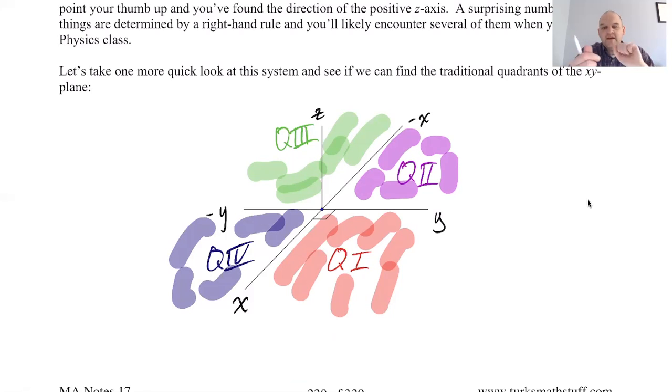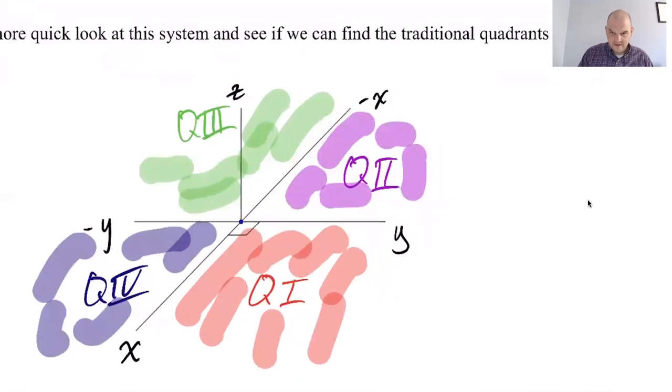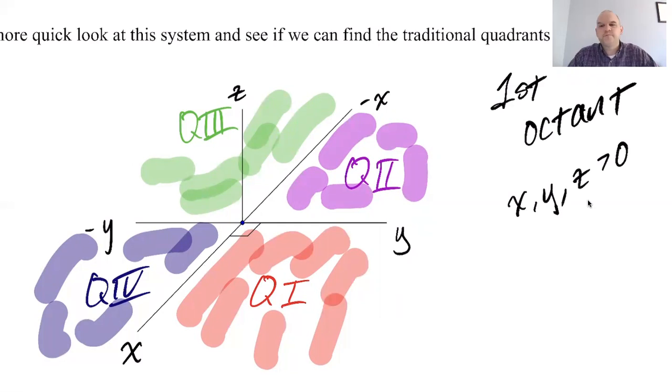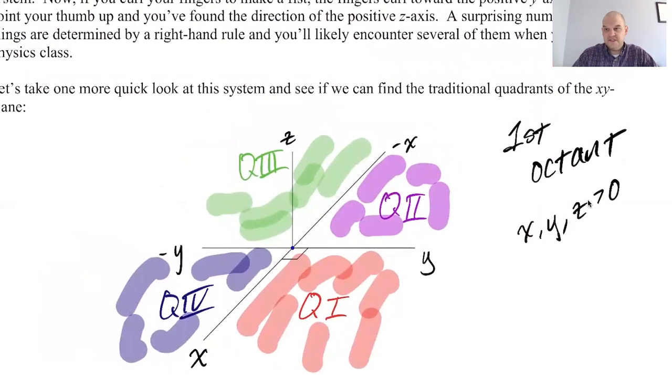So you end up with eight octants. The only one that people really agree on is the first octant. The first octant is when everything is positive. So the first octant, O-C-T-A-N-T, is when X, Y, and Z are all greater than zero. So all of the other octants exist. But instead of giving them numbers, we usually just talk about above the second quadrant, below the second quadrant, above or below the third, and so on. So instead of dealing with eight different numbers, we have the first octant. Everyone agrees on that. Everything is positive.